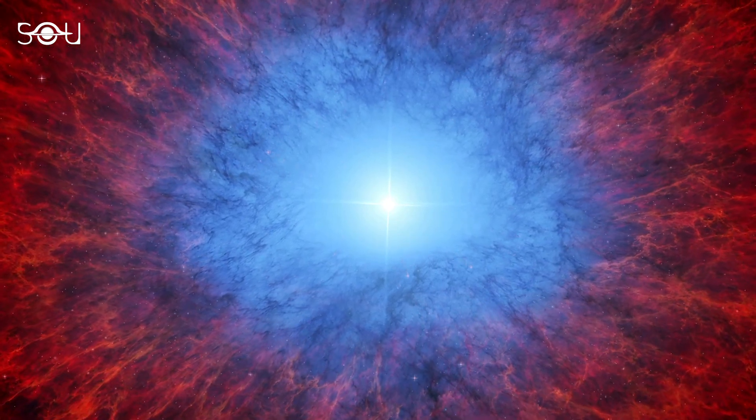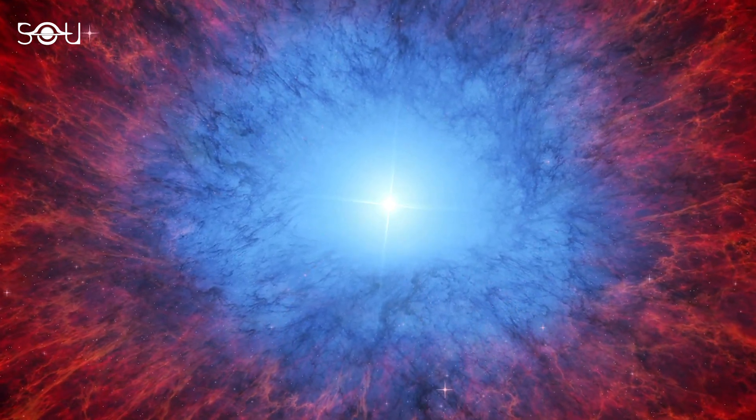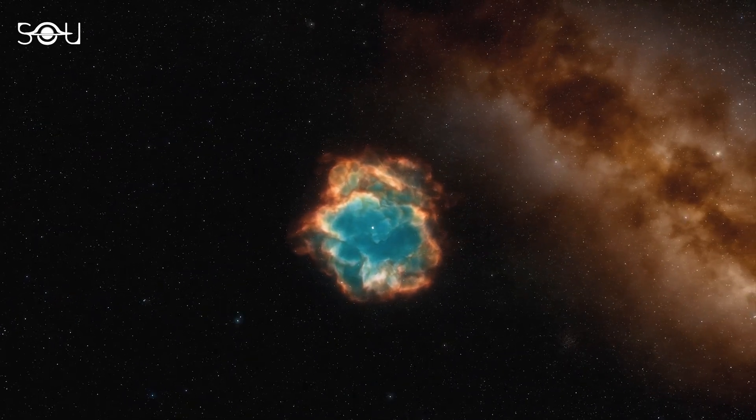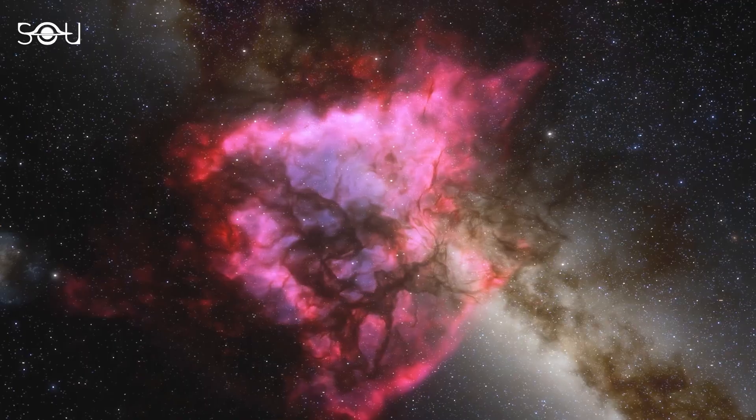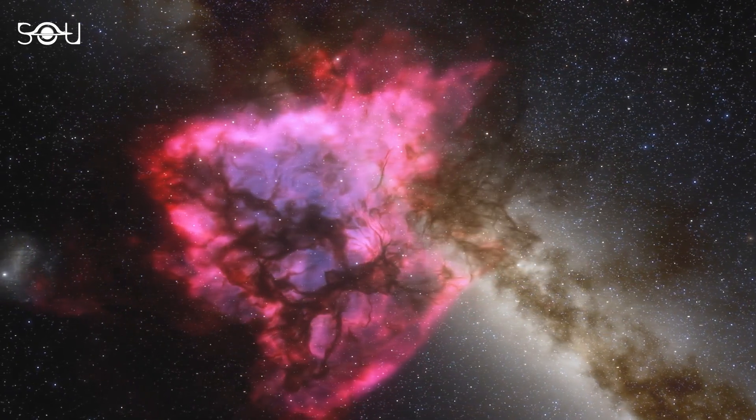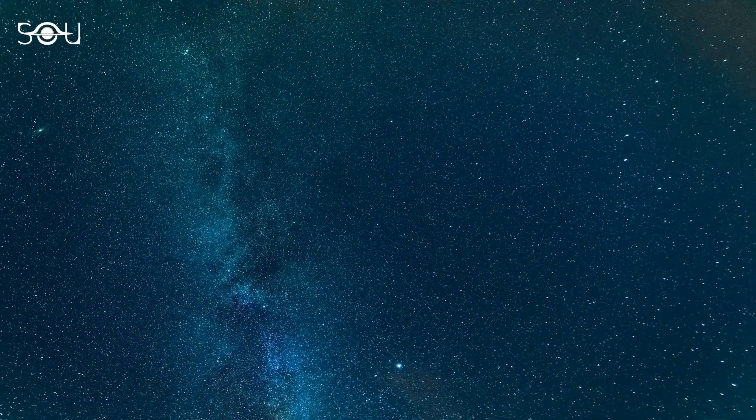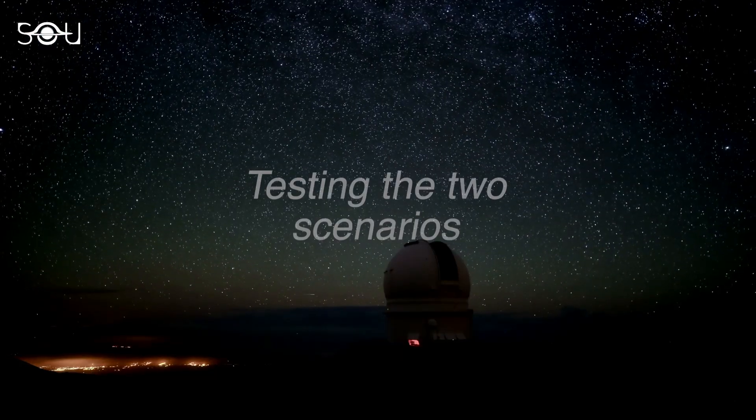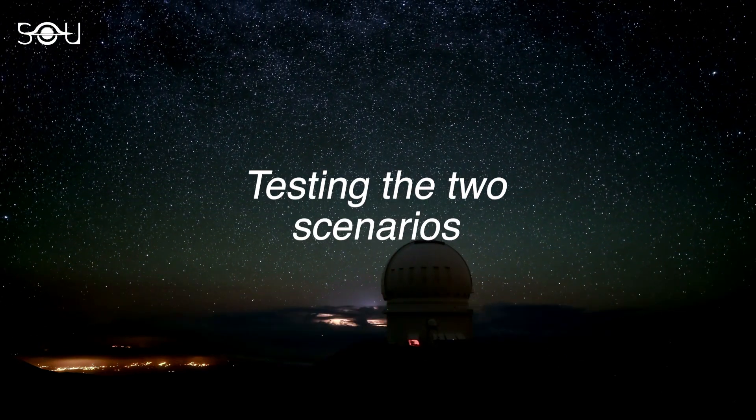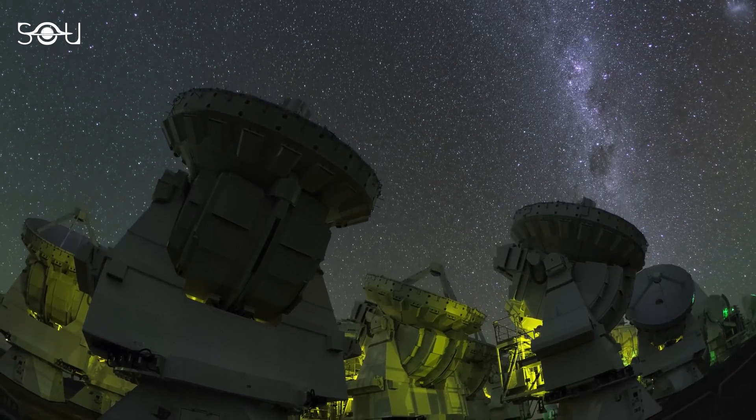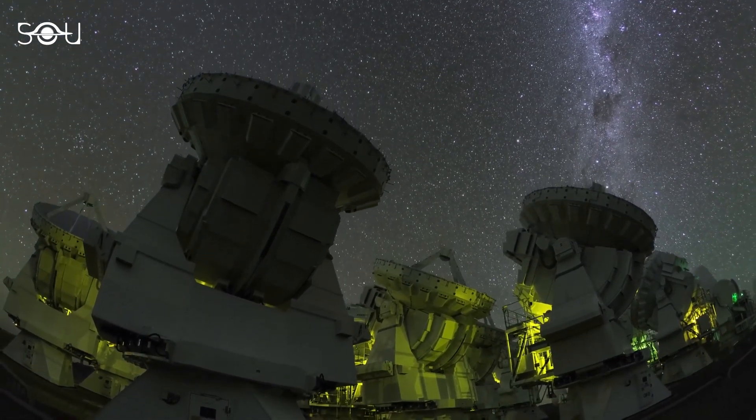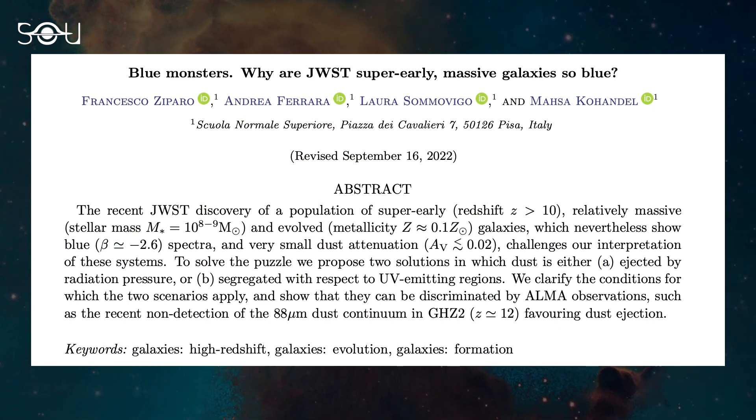The alternative scenario to explain low dust attenuation is the spatial segregation of dust. In this scenario, the ultraviolet radiation mostly comes from the transparent diffuse interstellar medium, hosting either little or cold dust. The dust-obscured star-forming regions are instead located in giant molecular clouds that are strongly emitting at infrared wavelengths. Although both scenarios provide a physical explanation for the blue colors of the observed galaxies, they make different predictions concerning some infrared fluxes at particular wavelengths, which can be tested by the Atacama Large Millimeter Array, or ALMA. Regarding the segregation scenario, the paper is mostly against it because of some former observations from earlier this year using ALMA.